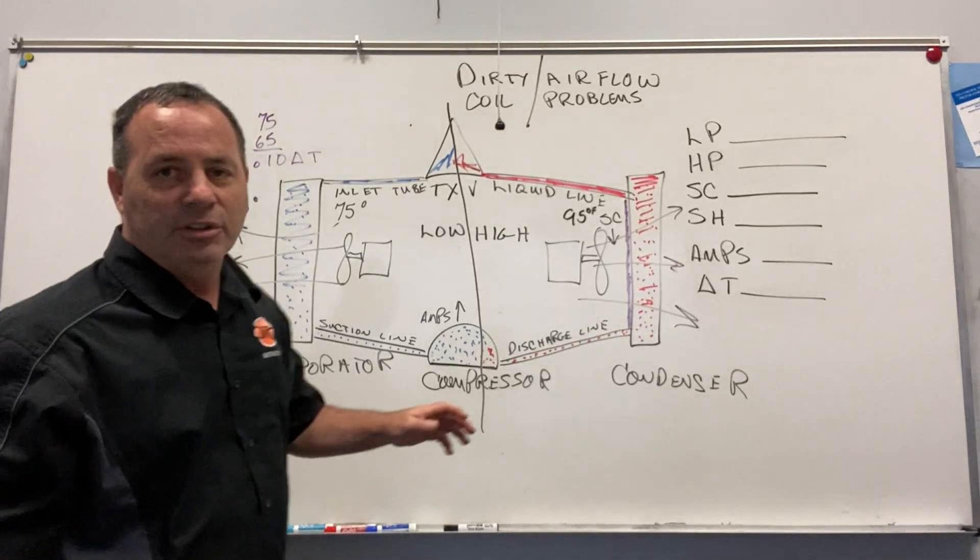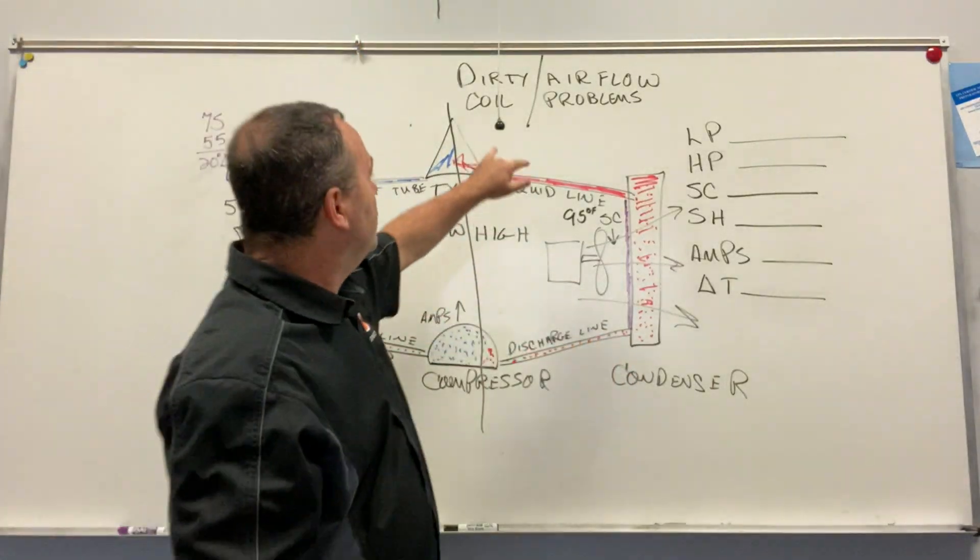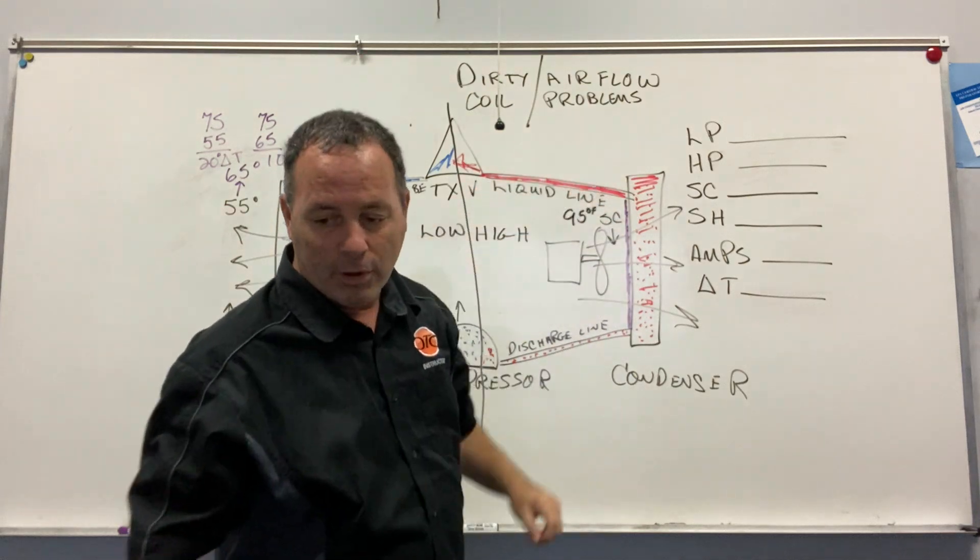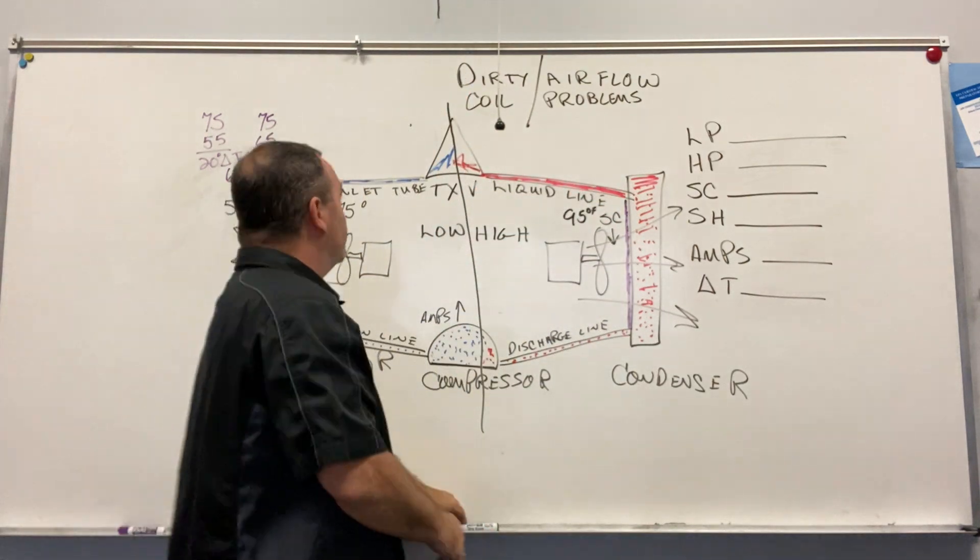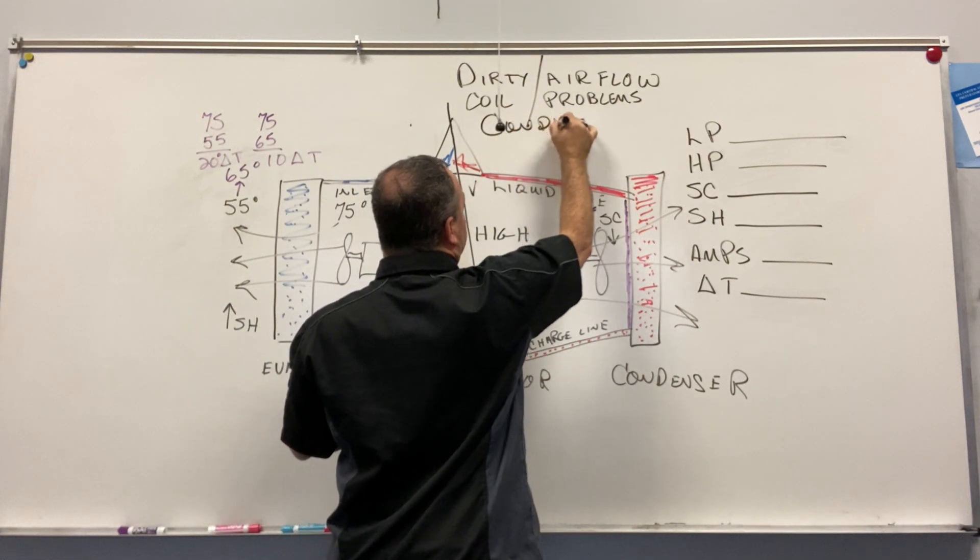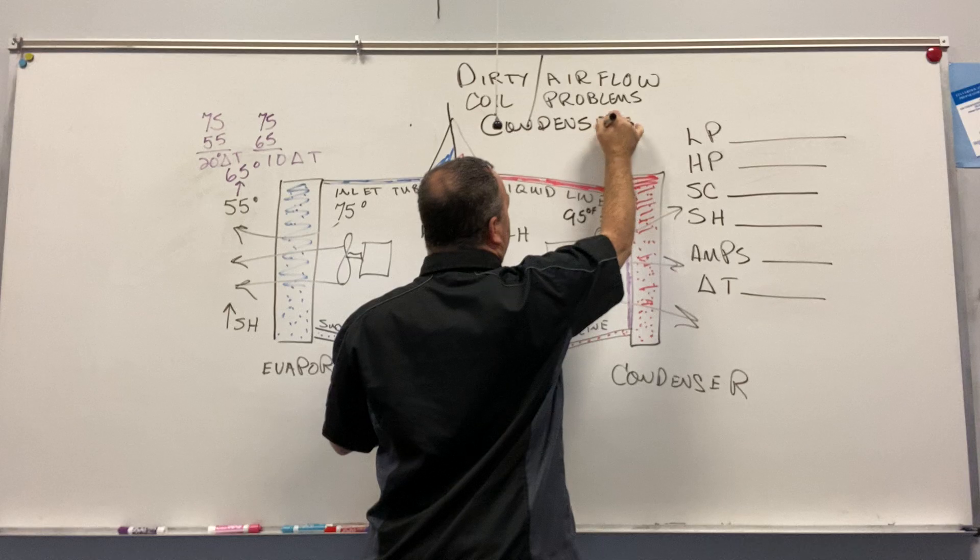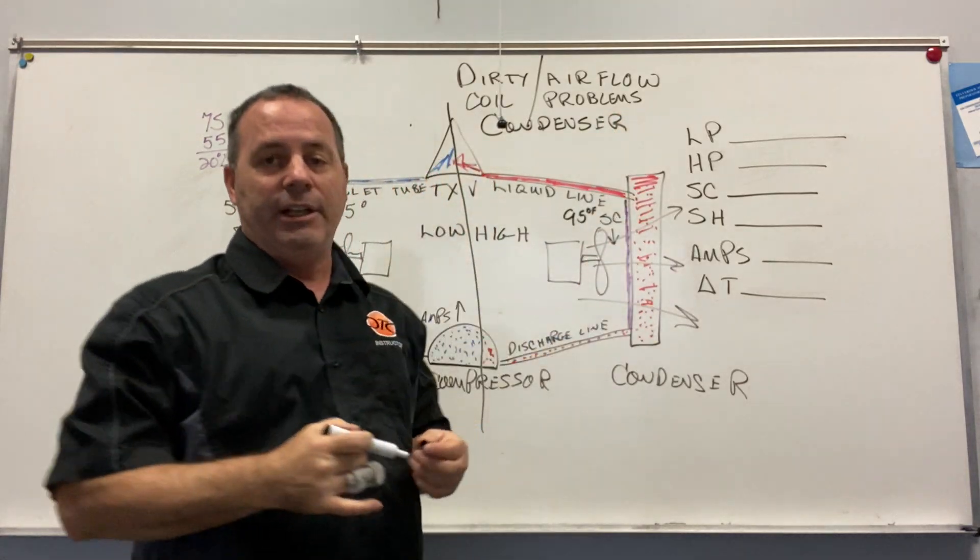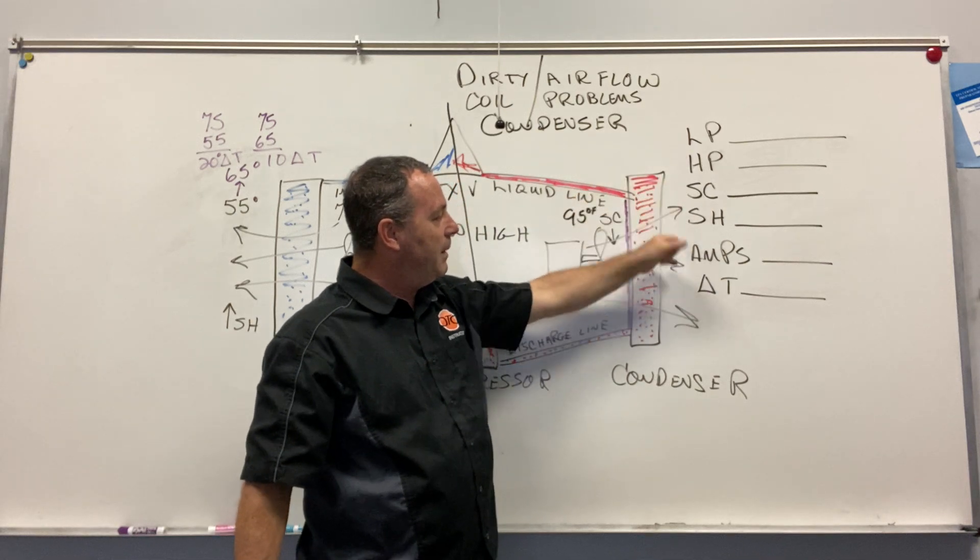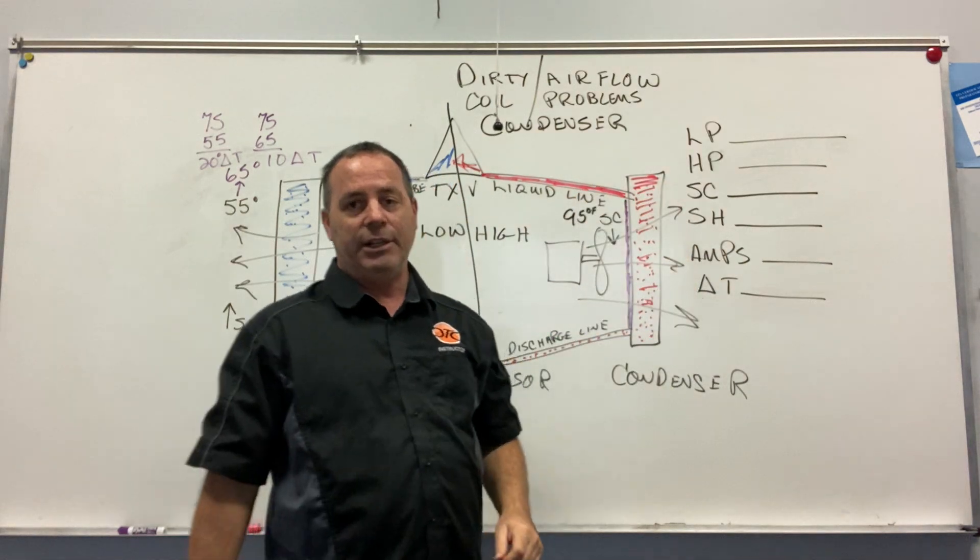Okay, so let's talk about the symptom here called dirty condenser coil airflow problems. So let's write condenser on there just to make sure we know that that's what we're talking about. We're going to identify some things you need to know when you're troubleshooting in the field. What are your pressures, your subcooling and superheat doing, your amps, and your delta T doing?